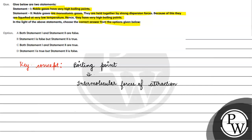Agar hum bolein ki noble gases have high boiling points, iska matlab hai ki unke beech ki intermolecular forces of attraction bahut zyada honi chahiye. But aisa hota nahin, kyunki noble gases ke particles ke beech mein dispersion forces lagte hain — jinhein London forces bhi kehte hain.